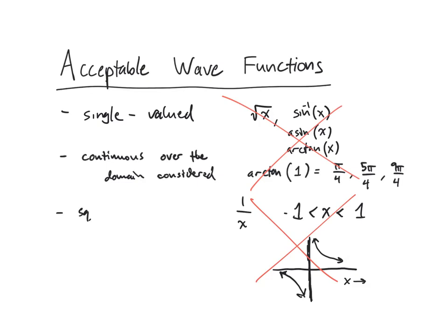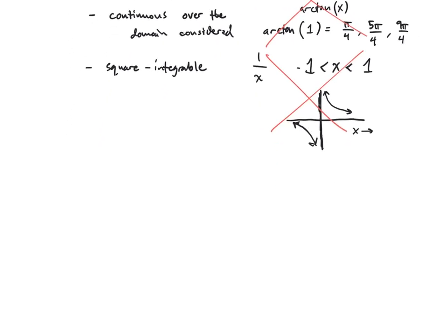Now the next criteria is that the function be square integrable, meaning that if you square the function and integrate over the domain, the answer should be finite. So let's see a few examples of functions and domains and determine whether or not they are acceptable.